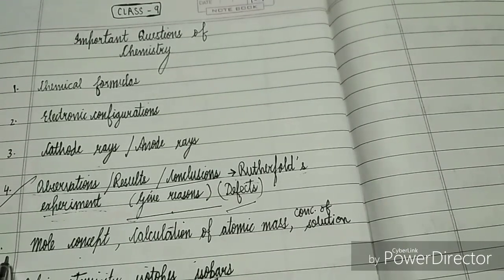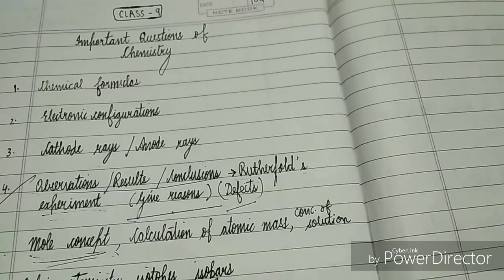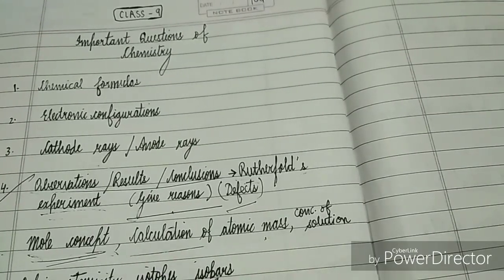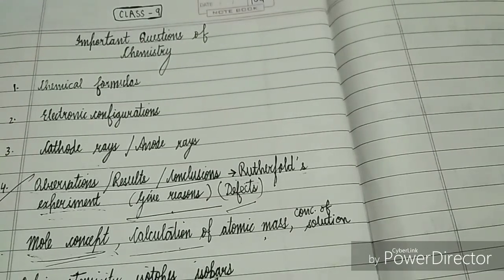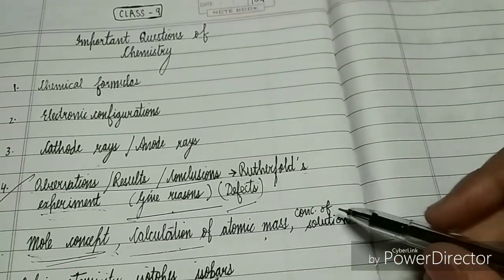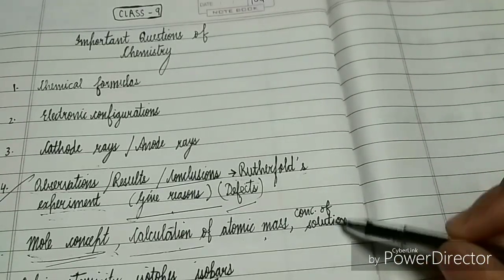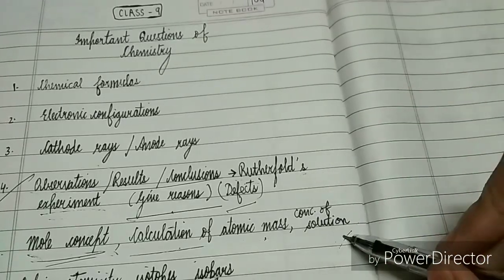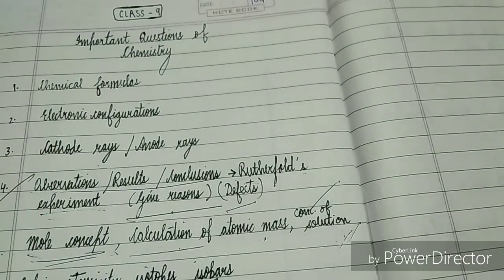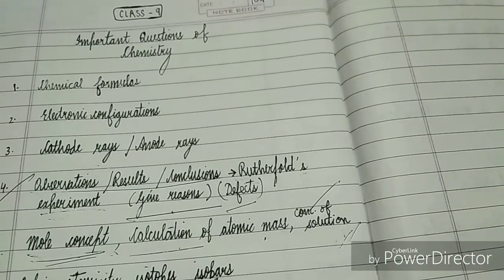On the fifth part, we have very important mole concept. Mole concept will obviously be seen in the exam. Four to five numericals are going to be there on mole concept itself, then calculation of atomic mass. Another numerical would be concentration calculation of solution. Don't lose your marks in numericals. These are very simple, just concept-based. You need to revise the formulas.